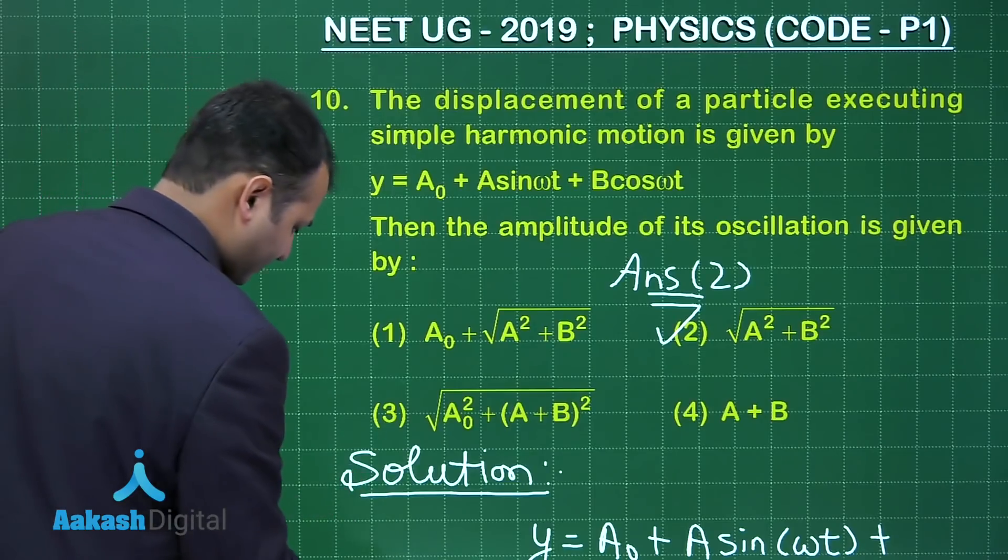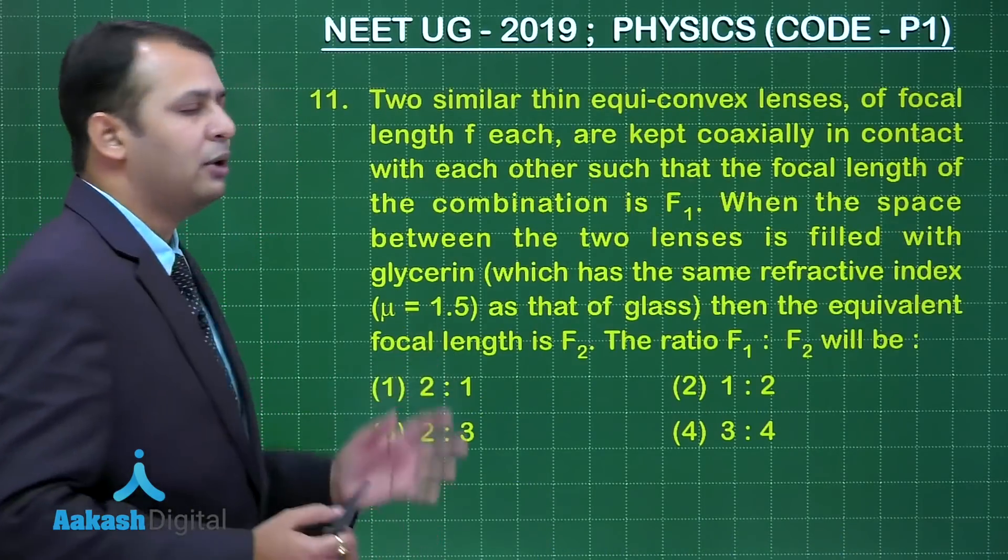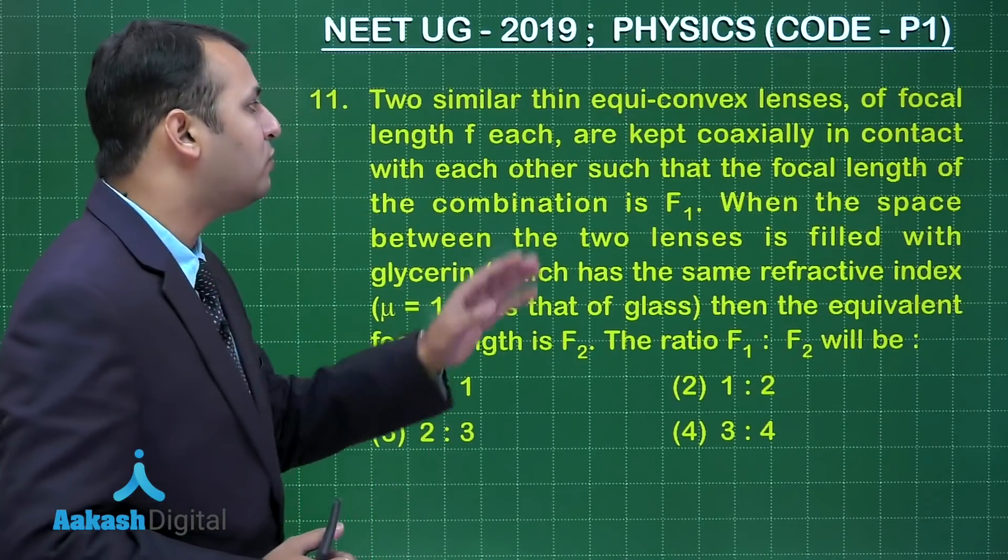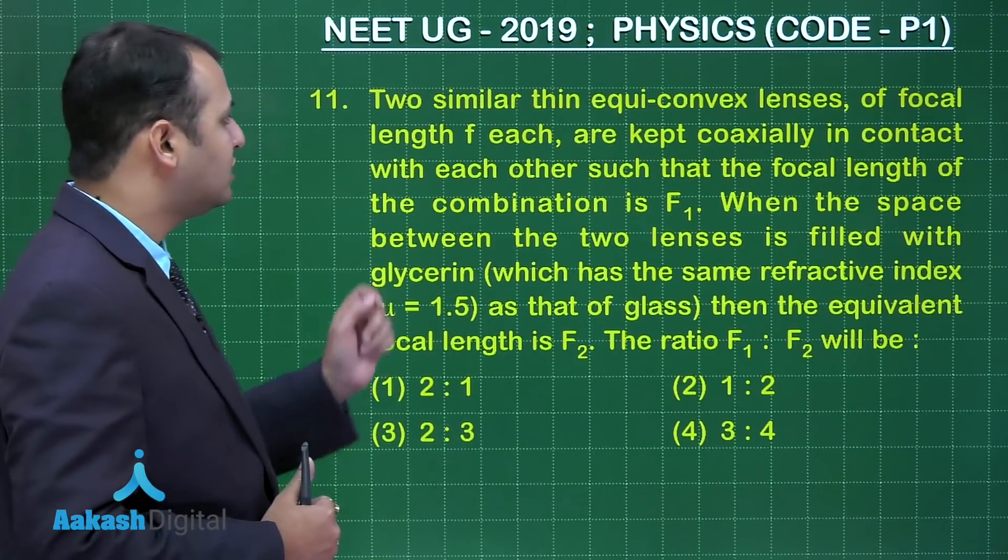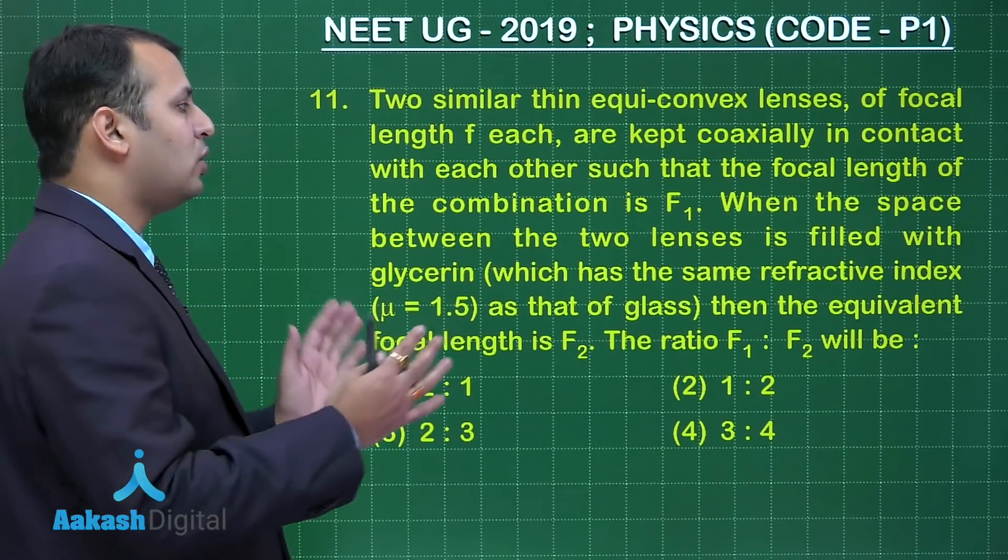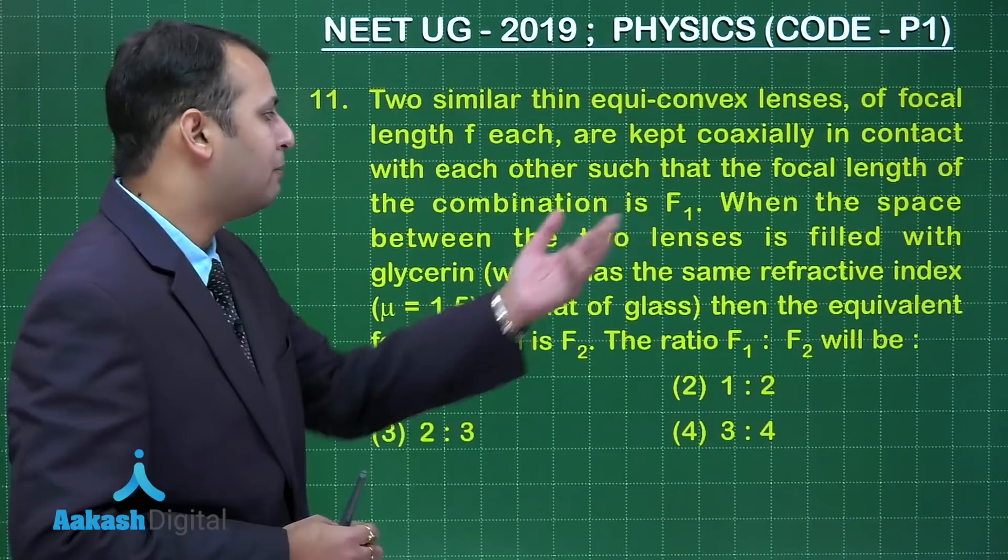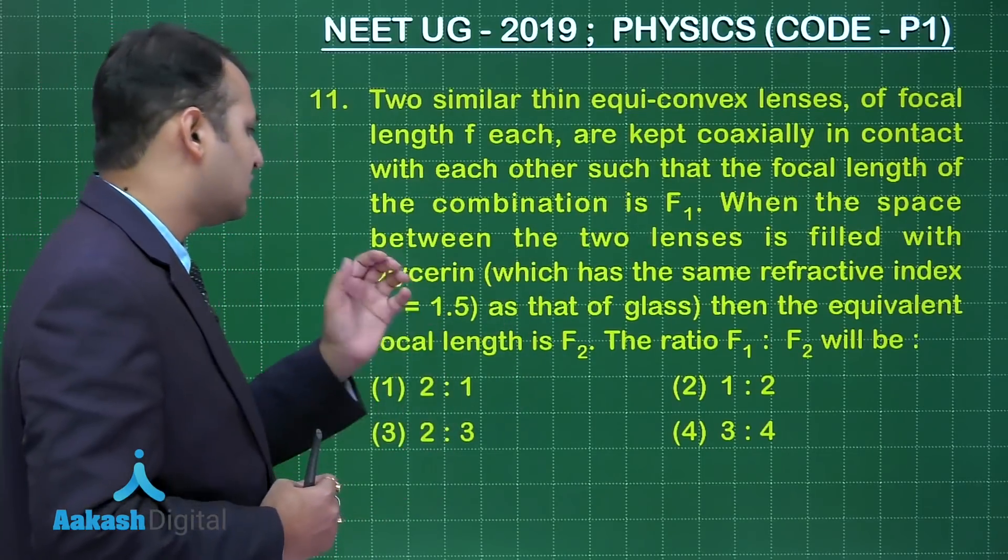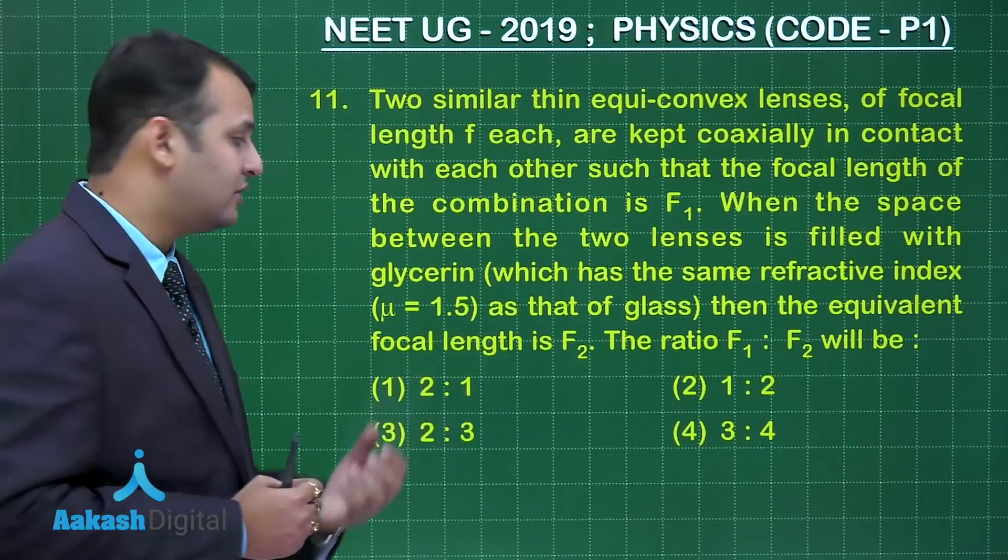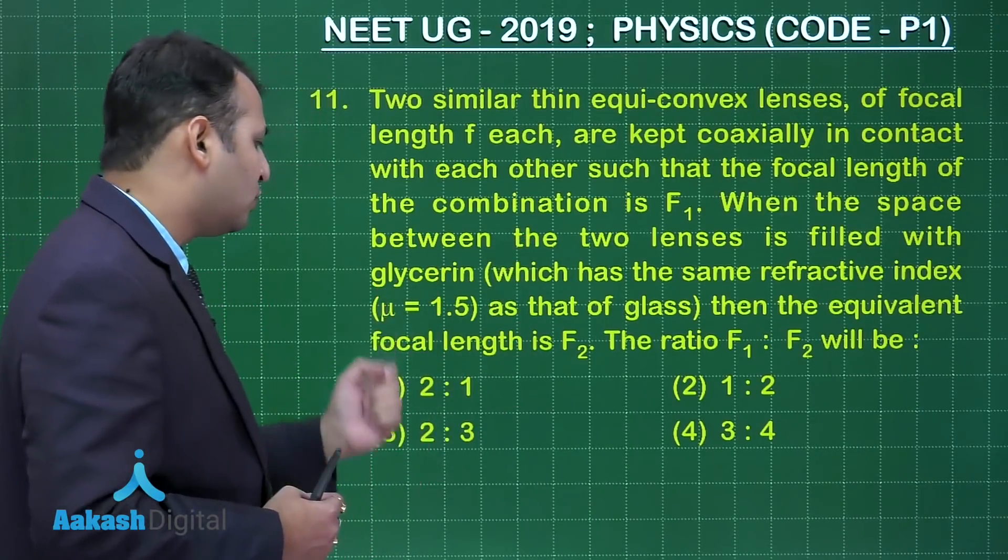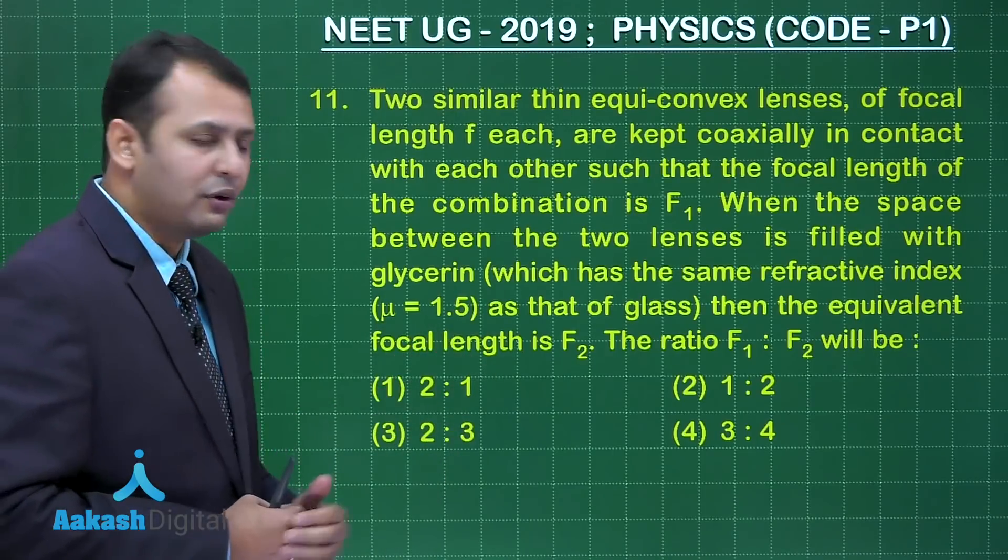Now let's move on to our next question, that is question number 11. The question you see belongs to chapter of optics. Here two similar thin equiconvex lenses of focal length f each are kept coaxially in contact with each other such that the combination is having a focal length capital F₁. When the space between the two lenses is filled with glycerin, which is having the same refractive index as that of glass, that is 1.5, then the equivalent focal length is F₂. We have to find the ratio of F₁ and F₂.